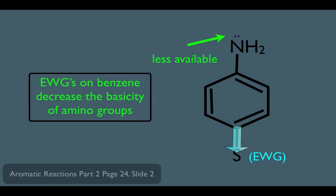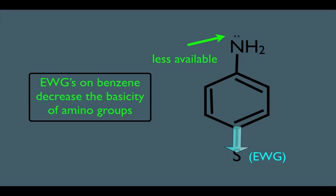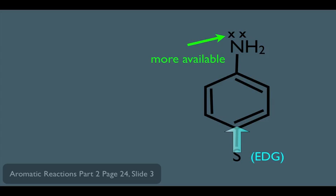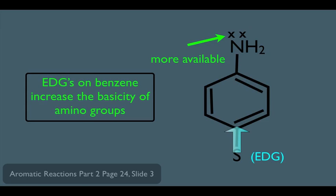Notice a slight difference here. When it comes to measuring acidity, we focus on the conjugate base of the acid. But when it comes to measuring basicity, we simply focus on the original basic molecule. What if your substituent happens to be an overall electron donating group? Then pushing the electrons up towards the nitrogen makes these electrons more available. And more available means more easily protonated. Therefore, electron donating groups on benzene increase the basicity of amino groups.